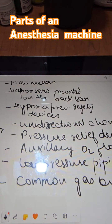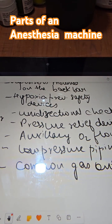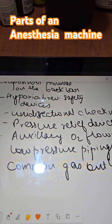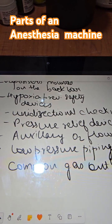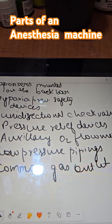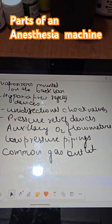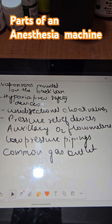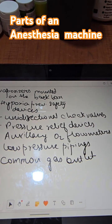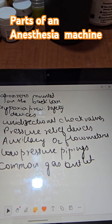The last one is the low pressure system, which contains flow meters, vaporizers, manifold of the back bar, hypoxic guard, pressure safety devices, unidirectional check valves, pressure relief devices, auxiliary oxygen flow meters, low pressure piping, and common gas outlet.